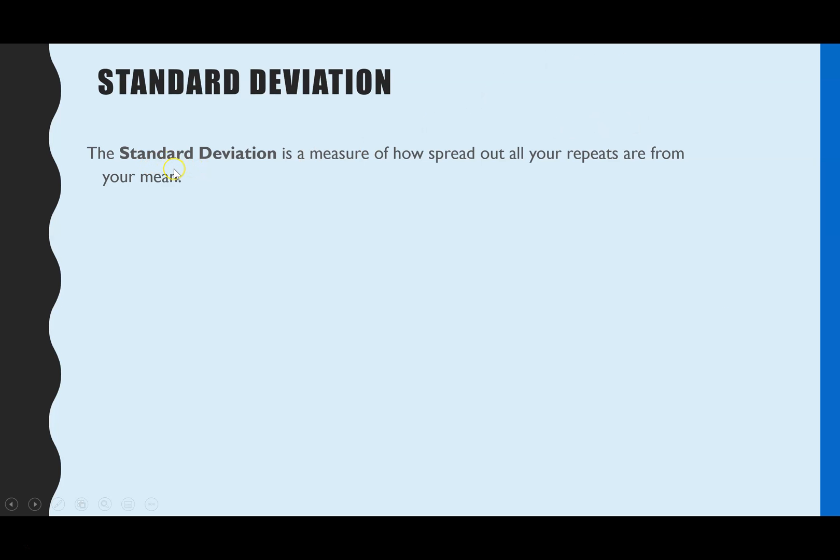So we can see here the definition. Standard deviation is a measure of how spread out all your repeats are from your mean. So you could be asked what standard deviation is and have to give that definition. You could be asked what is the advantage of using standard deviation instead of the range. To answer that question you have to know this definition for standard deviation but also the definition of range which is the highest and lowest value.